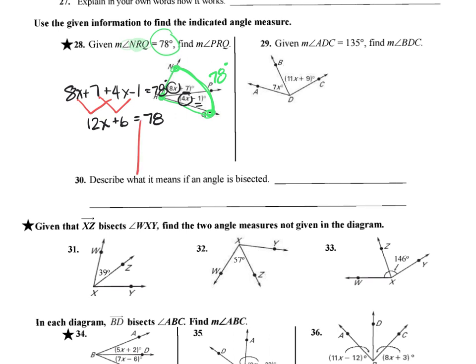Then from there, we're going to solve the equation. First thing we're going to do is subtract 6 from both sides. 12x is equal to 72. And then we divide both sides by 12, and we get x equals 6.